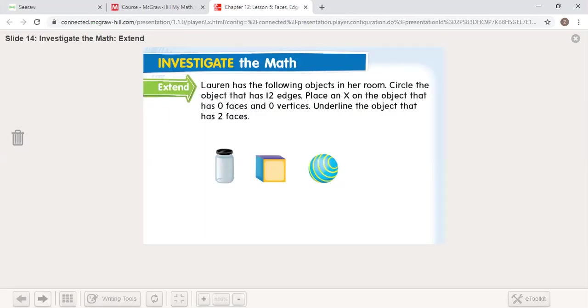All right, Lauren has the following objects in her room. Circle the object that has 12 edges. Place an X on the one that has zero faces and zero edges, and underline the object that only has two faces.